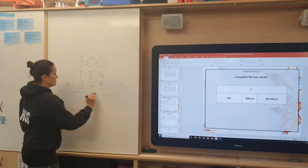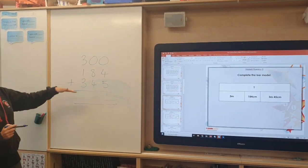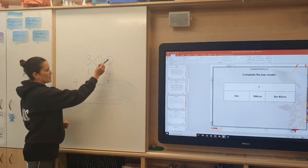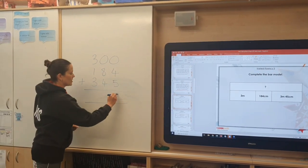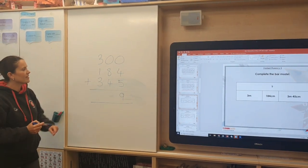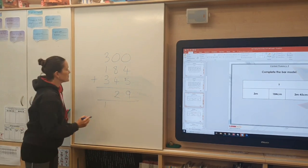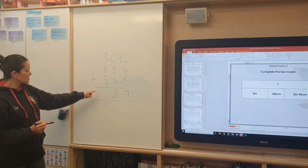And then to find that number, missing number at the top, I would then complete my addition. So my ones column here, four add five would give me nine. My tens column here, eight add four would give me 12. And then my hundreds column here,